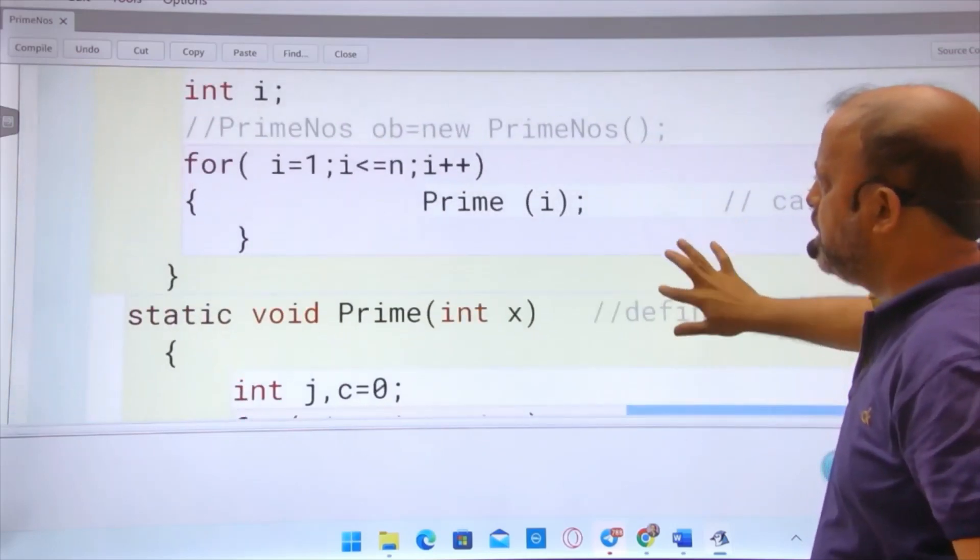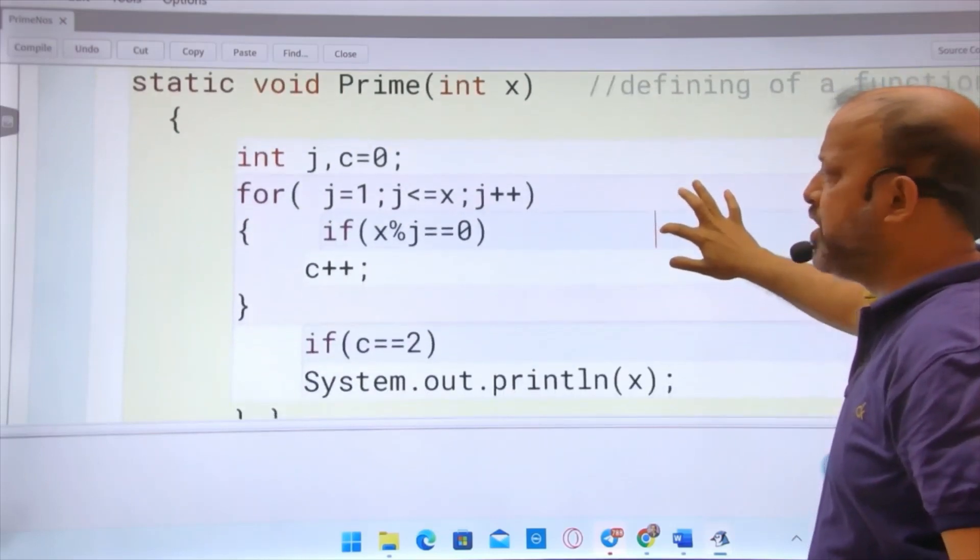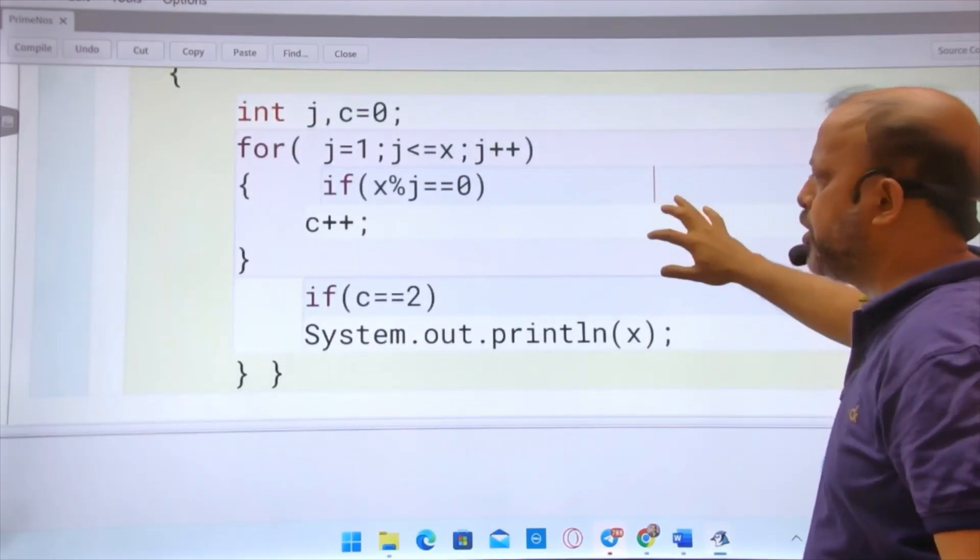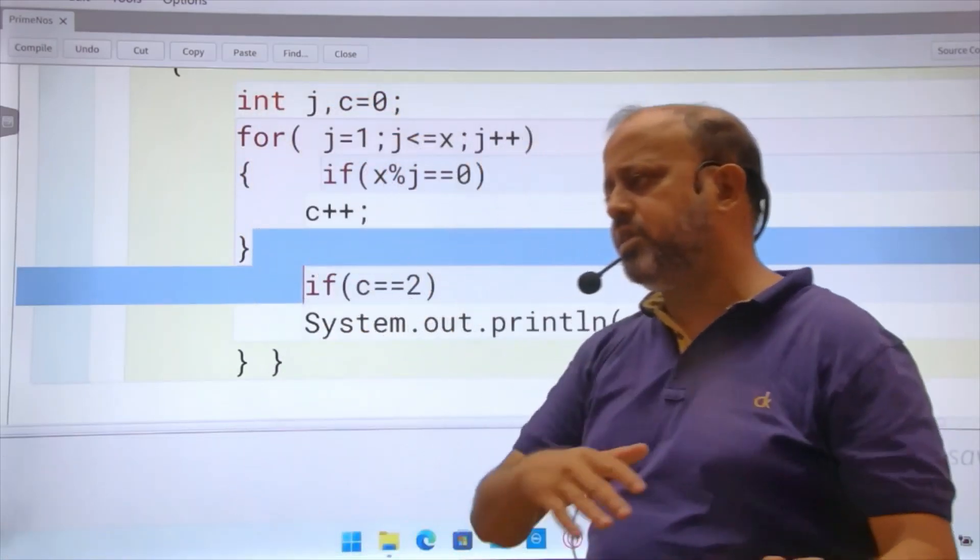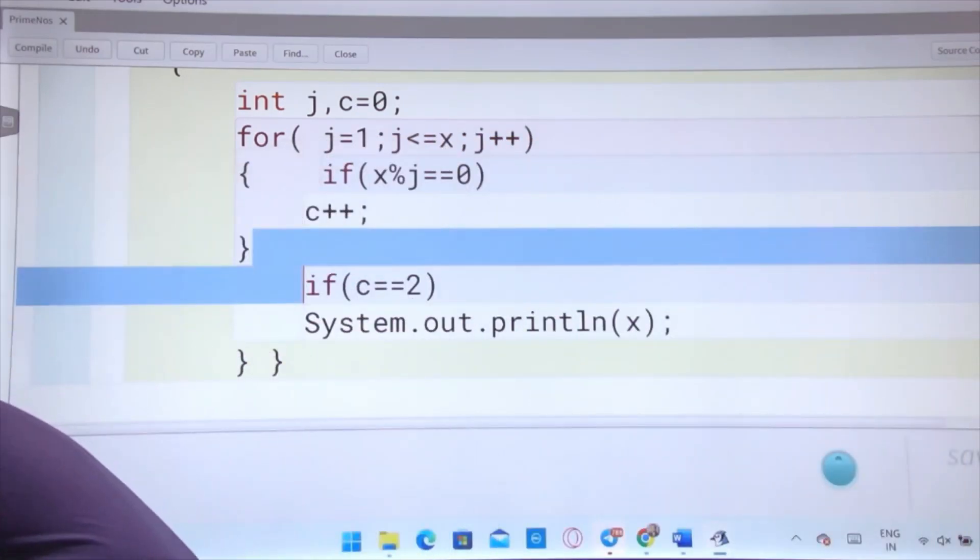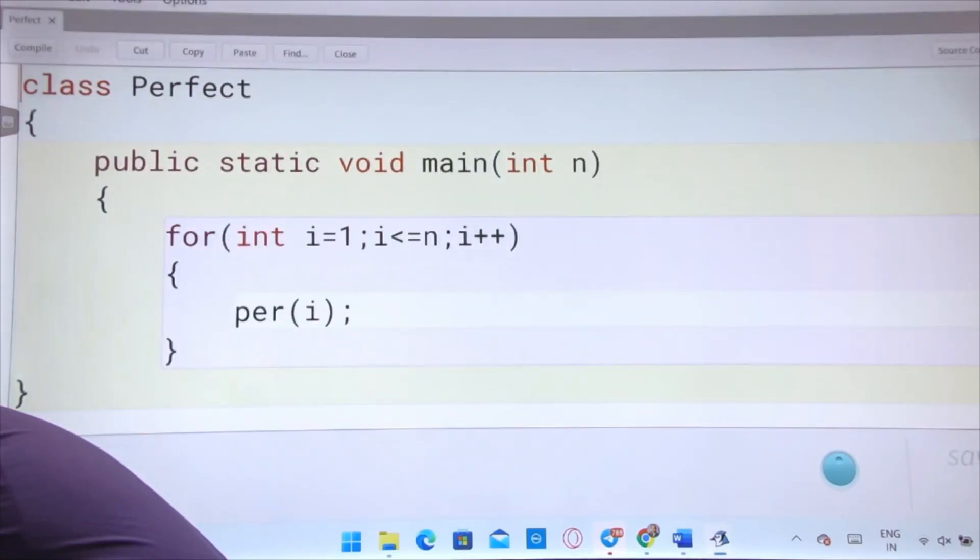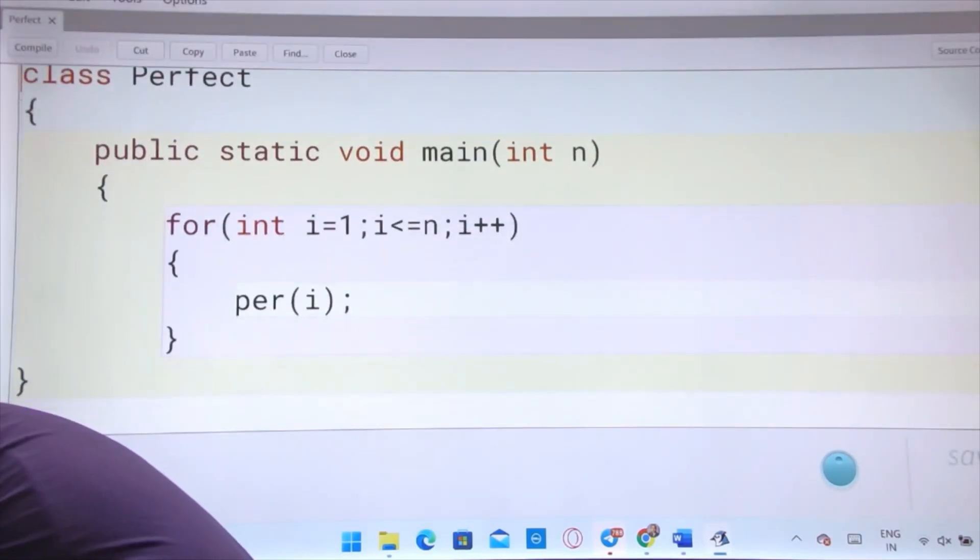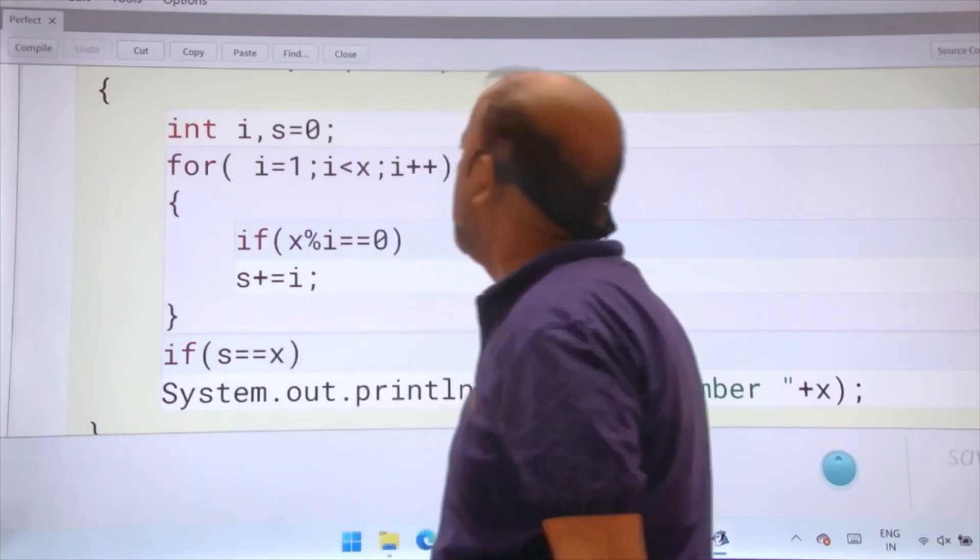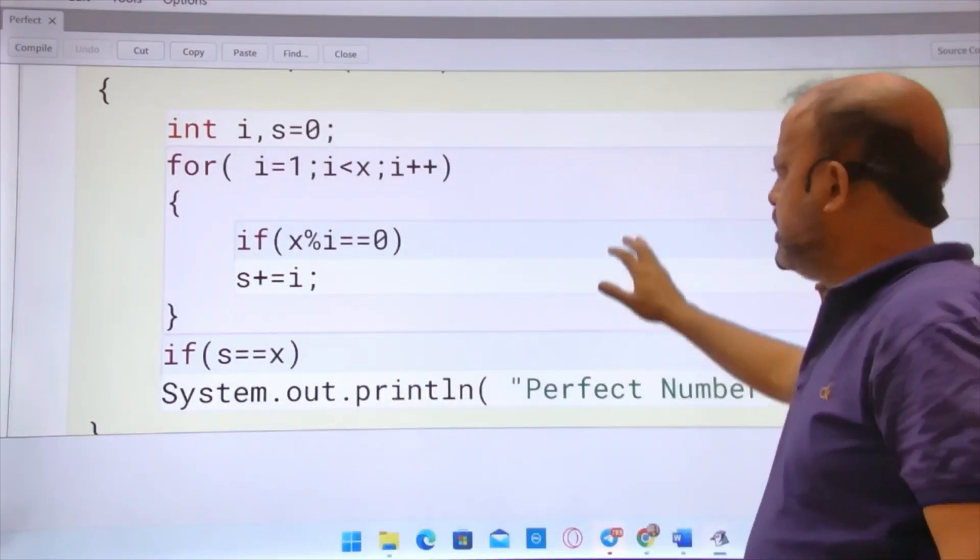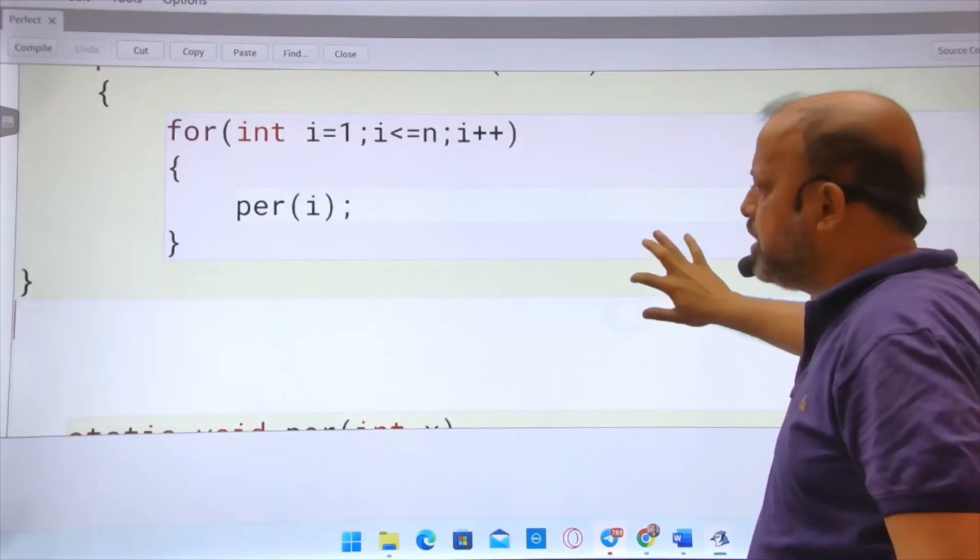You can see the code, this is the prime we have done many times. It is the topic of ten. Now next program is perfect number. Those who are studying at home, next time try perfect, then pause my video. See perfect number, same. One to n, I have called per i, and then you can see, void per int x. Per me, what is happening? Whole perfect number work is happening.